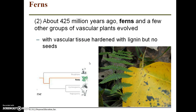The next group of plants to evolve were the ferns, about 425 million years ago. Ferns and a few other groups of vascular plants evolved at this time with vascular tissue hardened with lignin, but no seeds — one evolutionary step up from bryophytes. The vascular tissue allowed these plants to get larger and grow up from the ground more.